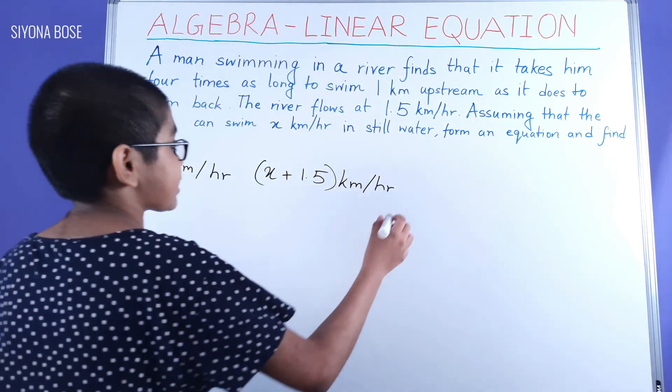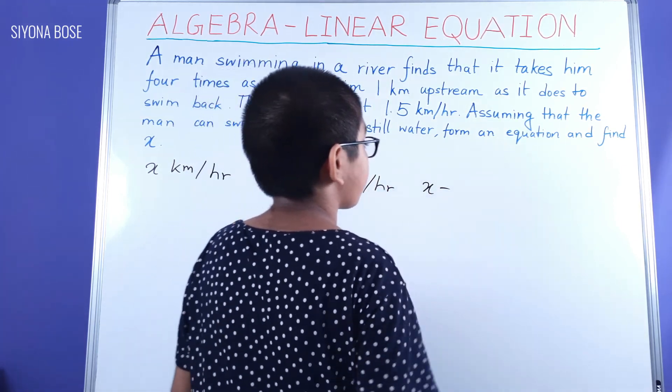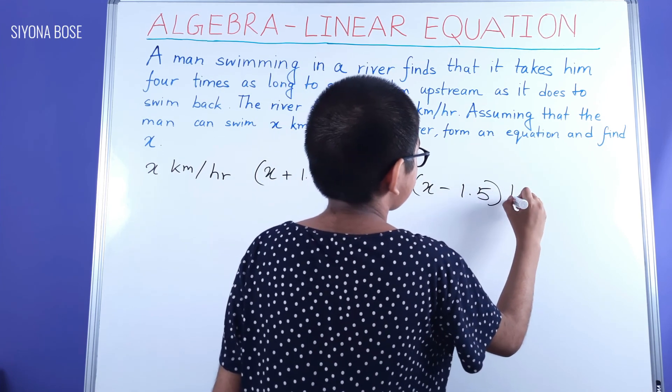And the upstream is opposite, that is, the speed of the man minus 1.5, that is, the speed of the river, kilometers per hour.